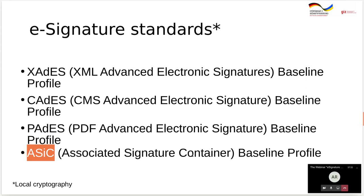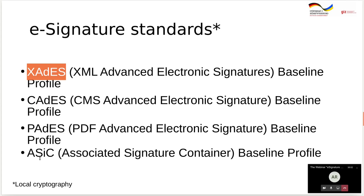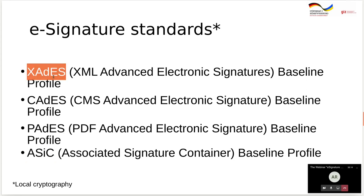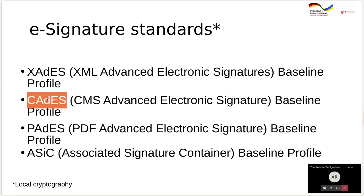The last one is ASiC — Associated Signature Container. It is not itself a signature type, but a container that gives you the ability to bind one document or multiple documents — for example, hundreds of PDFs or different attachments — with thousands or dozens of signatures in different formats such as CAdES or XAdES. A use case for ASiC may be a cross-border contract between Estonia and Ukraine or Georgia, where Estonia uses XAdES format by default in government bodies and Ukraine currently uses CAdES. In the ASiC format you will have a zip file with your PDF contract, an XAdES signature from the Estonian counterparty, and a CAdES signature from the Georgian counterparty.